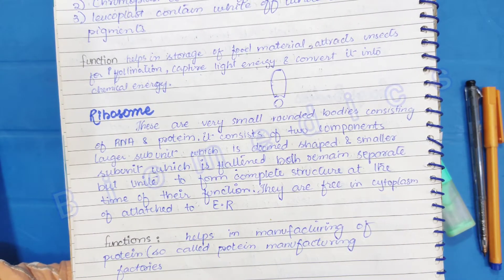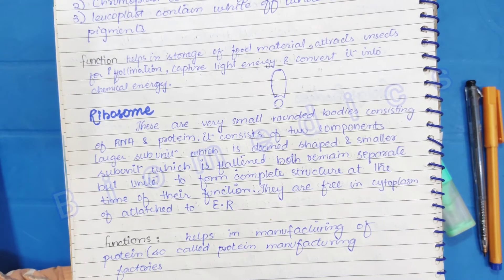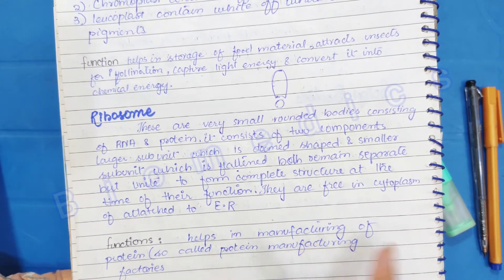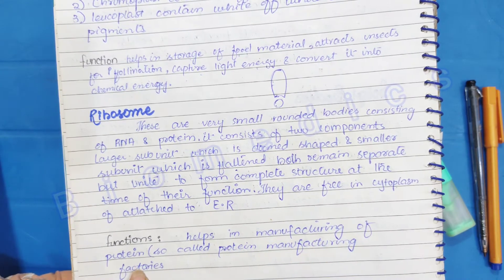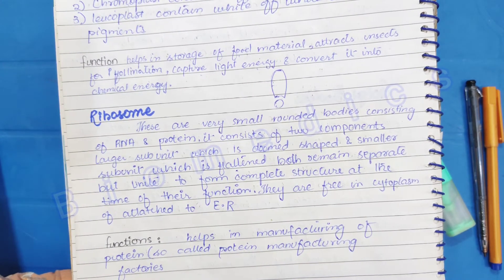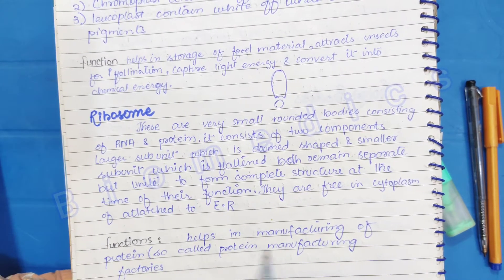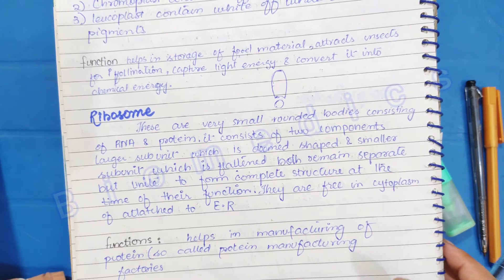The function of ribosomes is that they manufacture proteins, which is why we call them protein manufacturing factories. You can also write that they help in the manufacturing of protein, so they are called protein manufacturing factories.